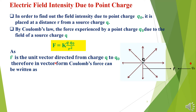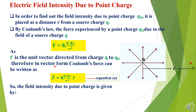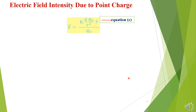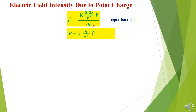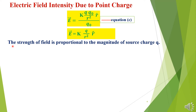Since R̂ is the unit vector directed from Q to Q₀, in vector form Coulomb's force is F = K Q Q₀ / R² × R̂. The field intensity due to a point charge is E = F / Q₀. Substituting the value of F, Q₀ cancels and we get E = K Q / R² × R̂. The strength of the field is proportional to the magnitude of source charge Q — greater the magnitude of source charge, greater will be its field strength.